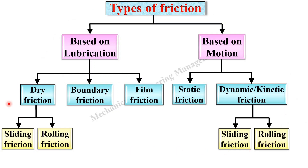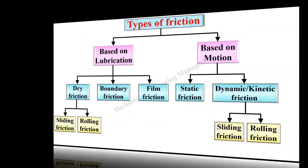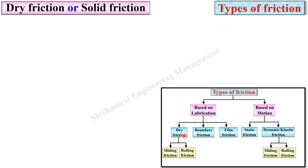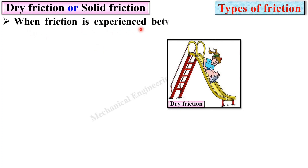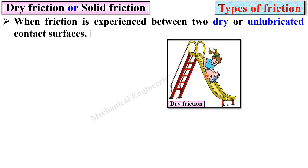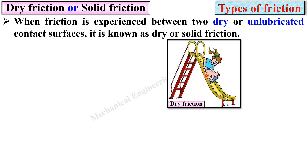Let us see all types of friction one by one briefly. First, dry friction, which is also called solid friction. When friction is experienced between two dry or unlubricated contact surfaces, it is known as dry or solid friction. The name itself indicates dry — meaning there is friction between two dry contact surfaces.